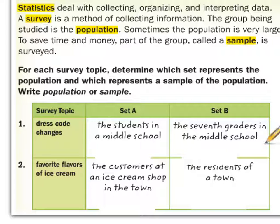A sample of that population would be the students at Mount Ridge Junior High. So that is a population, but it's a sample of Alpine School District. We can go even deeper and look at ninth graders at Mount Ridge Junior High — that would be a sample of Mount Ridge Junior High. We can go further into genders, sports, hair color, and so on. Those would all be populations or sub-samples.